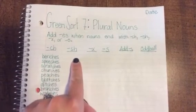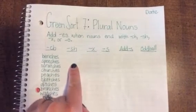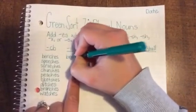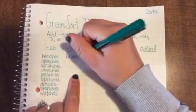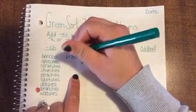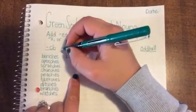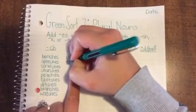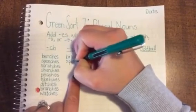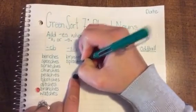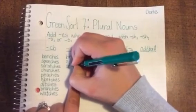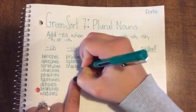And we also do that with singular nouns that end with SH. For example, brush becomes brushes. Splash becomes splashes. Crash becomes crashes.